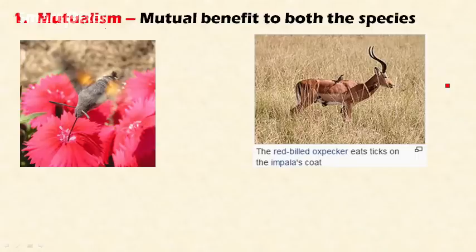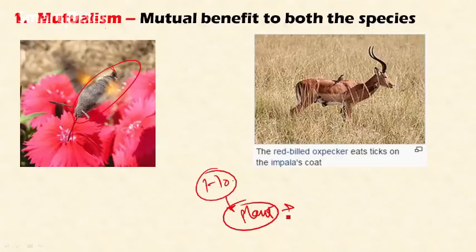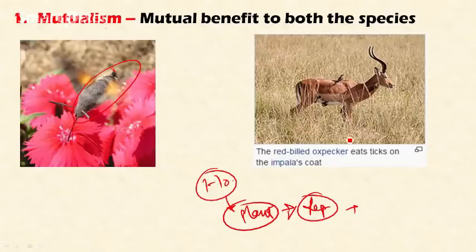Let's discuss mutualism first. Both species get a benefit. For example, a bird gets nectar from a flower, and in the process helps with pollination, aiding the plant's reproduction. Similarly, honeybees get nectar from plants while providing the service of cross-pollination, allowing plants to reproduce and sustain from one generation to another by setting seeds.